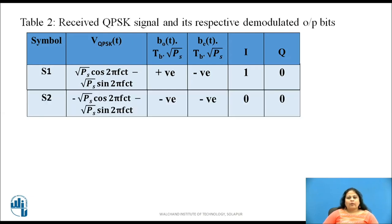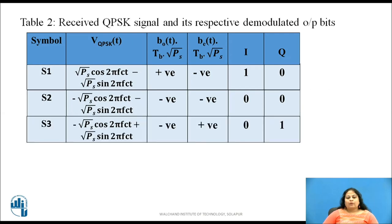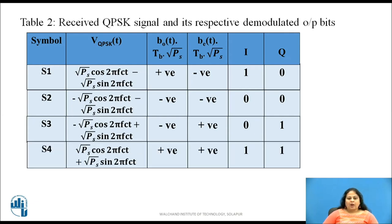Similarly, when symbol s2 is received decoded bits are 0 0. When symbol s3 is received decoded bits are 0 1. And when symbol s4 is received decoded bits are 1 1. Thus, during each symbol duration 2 bits are obtained at the output.